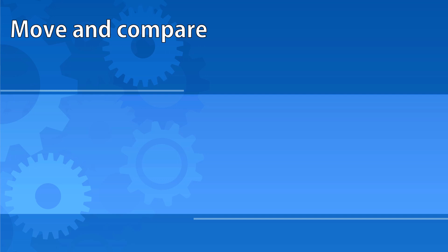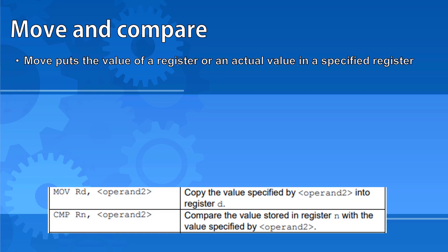The move command uses an operand, so it puts the value of a register or an actual value in a specified register. Some students get a little confused because it's called move, but if you use the move command, it really works more like copy. Because if you move a value from one register to another, it doesn't get taken out of the first register and placed in the second. It gets copied, so both registers would now have the same value.